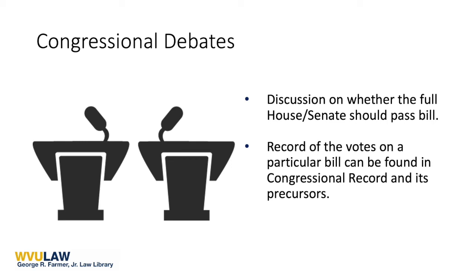Even though the Congressional Record has limitations, at times it can be all that's available for amendments made on the floor. If an amendment was proposed, considered, and voted upon on the floor, then the Congressional Record may be the only record of its intended purpose. It's also important to recall that legislative intent refers to the legislature as a whole and not any single legislator. This idea will help you parse through the statements of individuals in the record of floor debates. Among individual speakers, statements of the bill's sponsors are most indicative of legislative intent and the most persuasive as to the original purpose and meaning of the law.